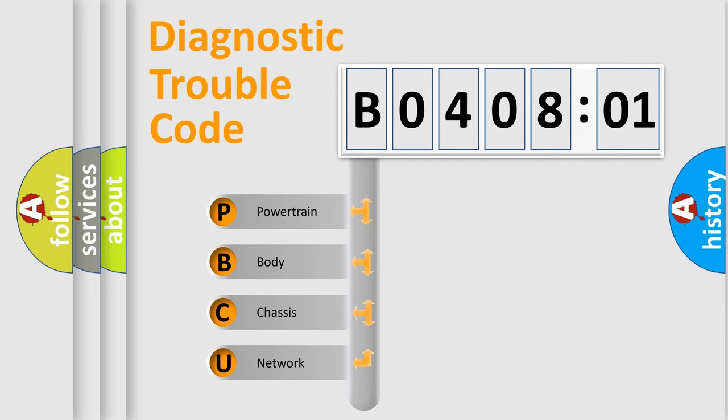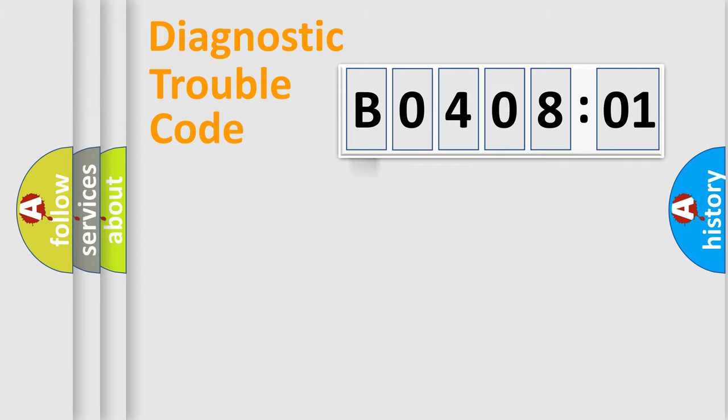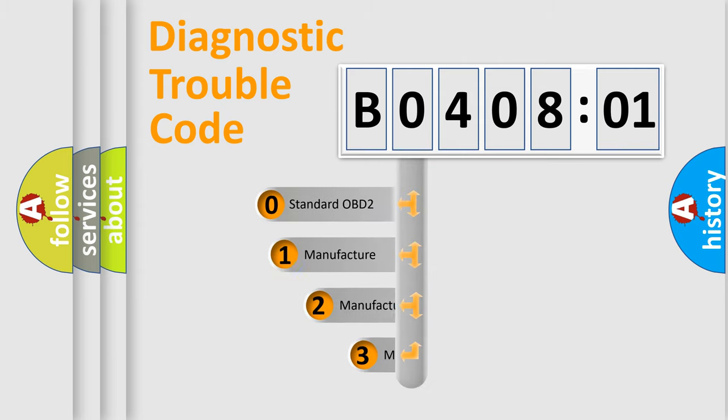We divide the electric system of automobile into four basic units: Powertrain, Body, Chassis, and Network. This distribution is defined in the first character code.